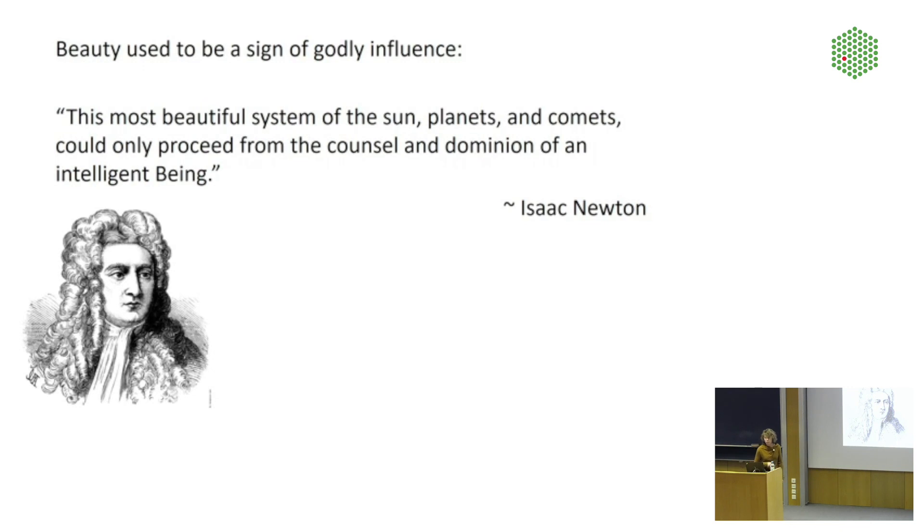I want to start with Isaac Newton about 400 years ago for whom beauty used to be a sign of godly influence. So he wrote this most beautiful system of the sun, planets and comets could only proceed from the counsel and dominion of an intelligent being. I'm picking Newton here to represent his time. He was certainly not the only one who conflated nature with god. It was just something that the scientists at the time did. So the argument is basically, well, god is wise and certainly if god made the universe, then the universe has to be beautiful.